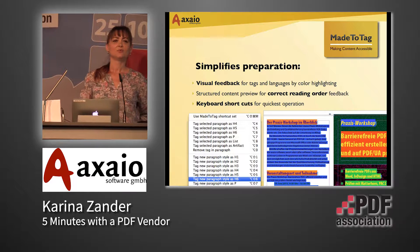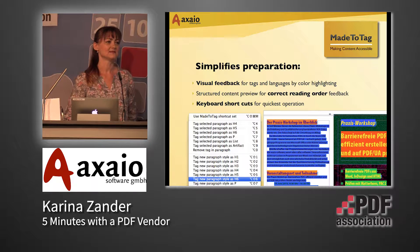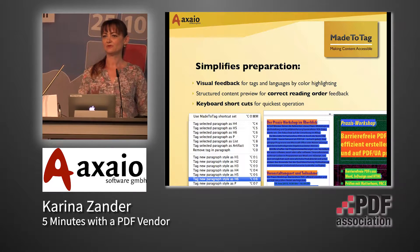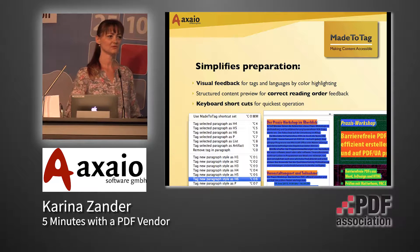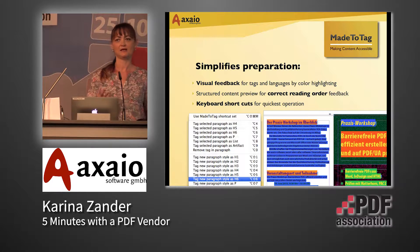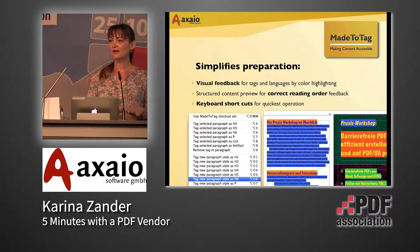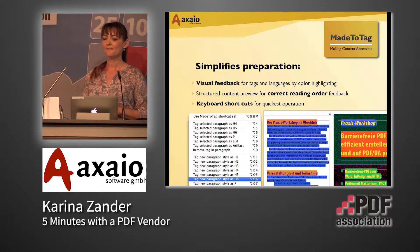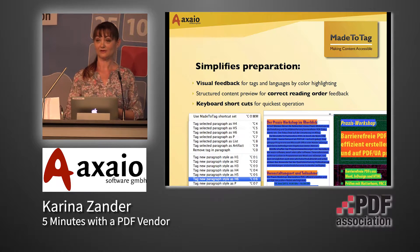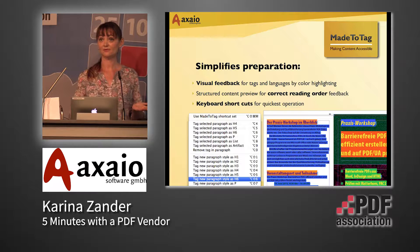To simplify the preparation process, we've included different control checkups for you as a user. For example, visual feedback based on color highlighting — a color highlighting for the text that you have chosen.